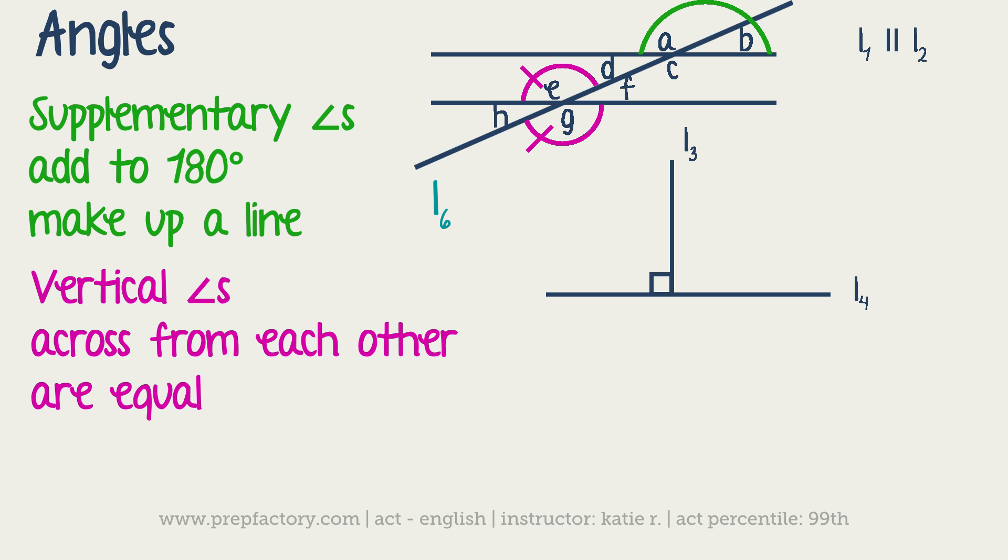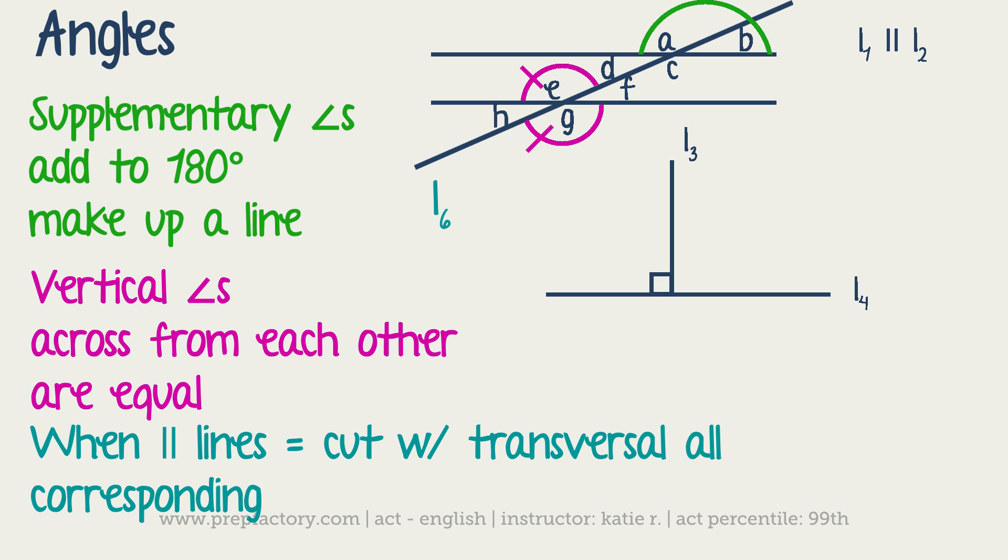Anytime you have a situation like that, all of the acute angles, those smaller than 90, so B and D, and all the obtuse angles, the ones bigger than 90, A and C, have to be equal to one another. So even though you've got eight angles, eight letters here, there's really only two different angle measurements.